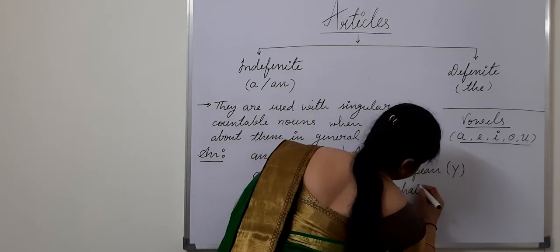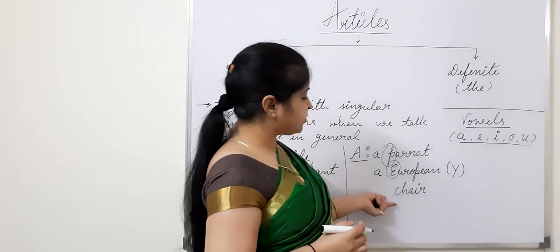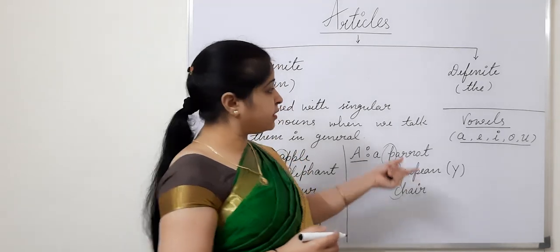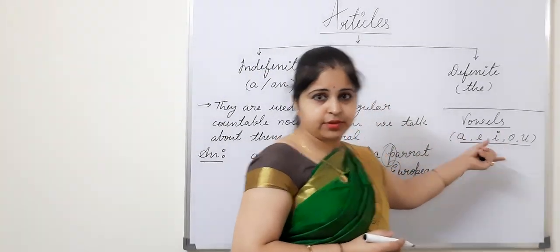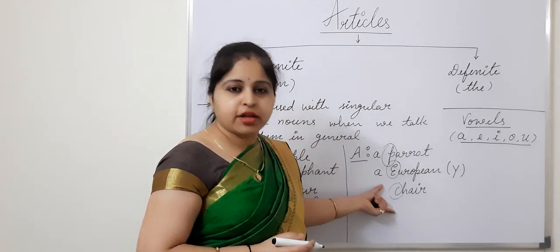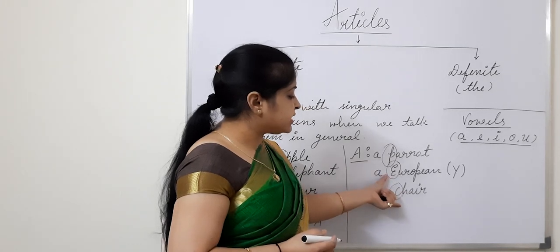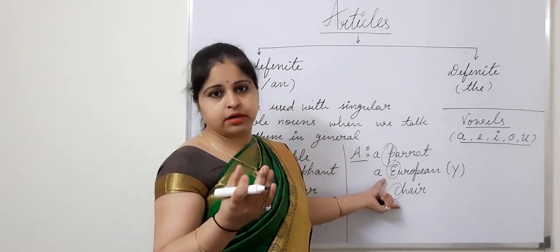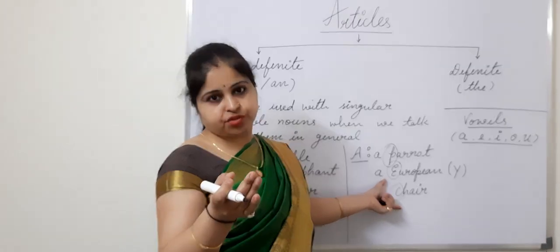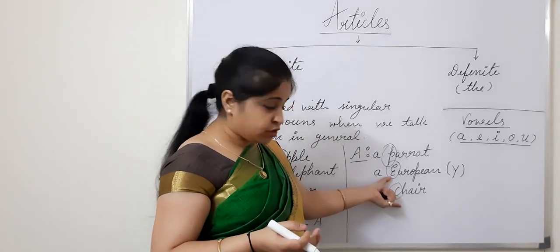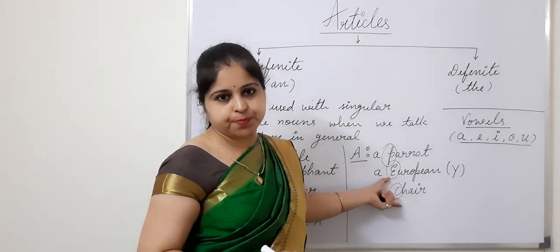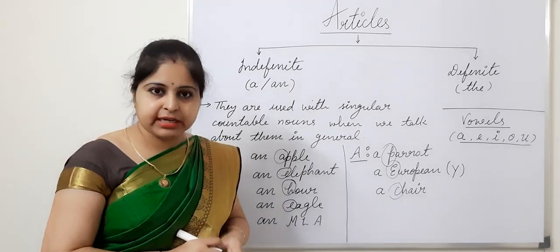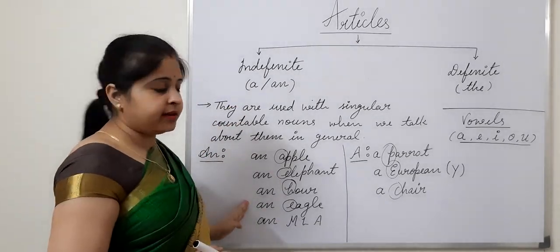Another example: 'Chair'. Chair is beginning with C, which is a consonant. C is not in the list of vowels — there are five vowels and C belongs to consonants. Chair has the consonant sound at the beginning, even though it has H with it. So we will be putting 'a' before it: a chair. I hope you are clear with the use of AN and A.